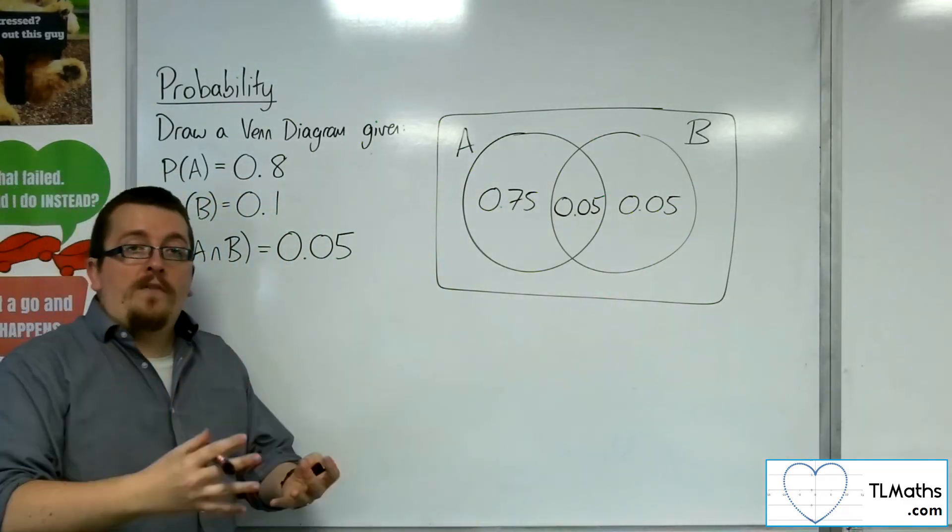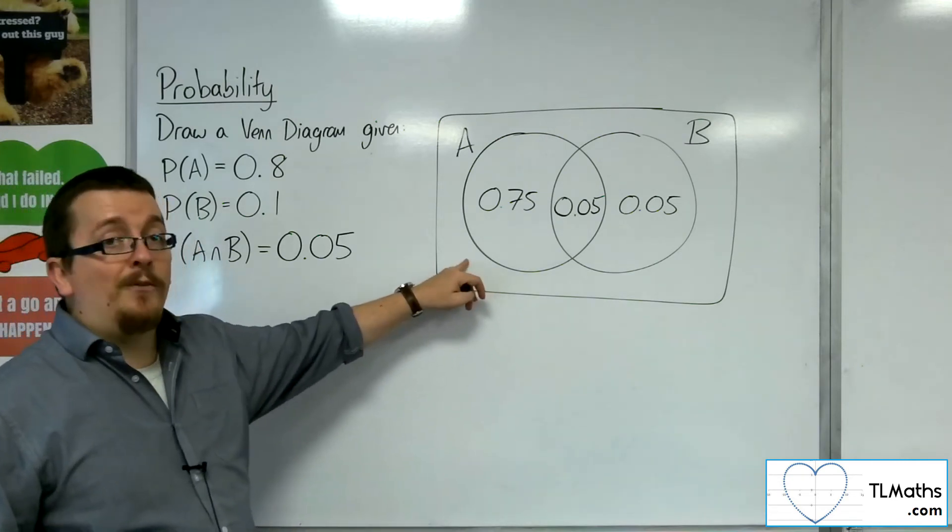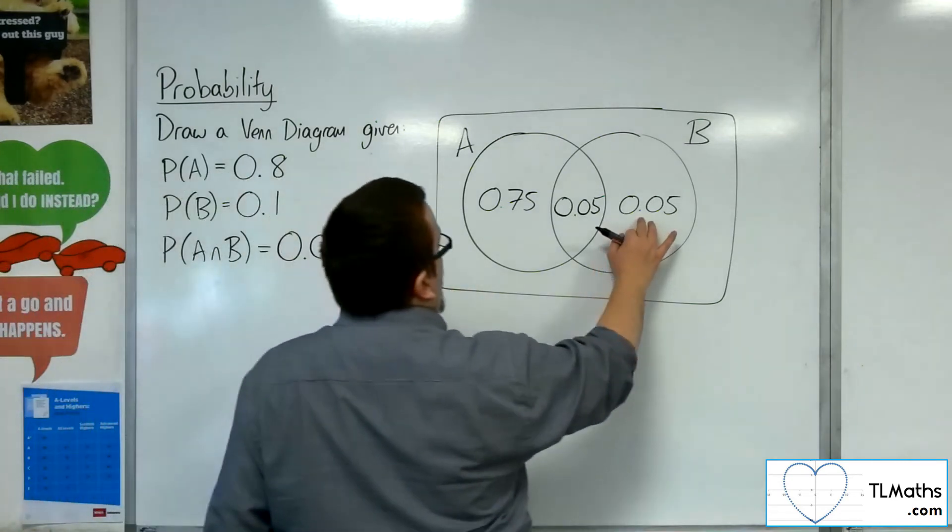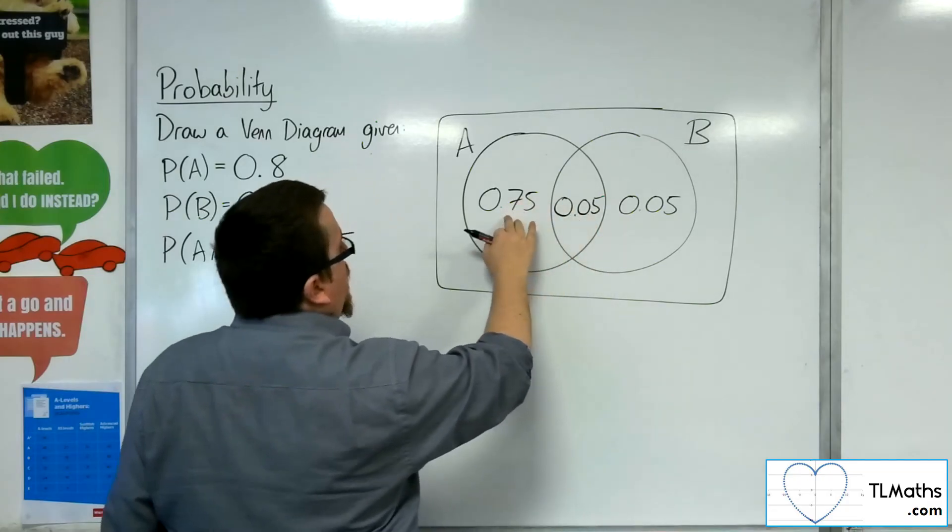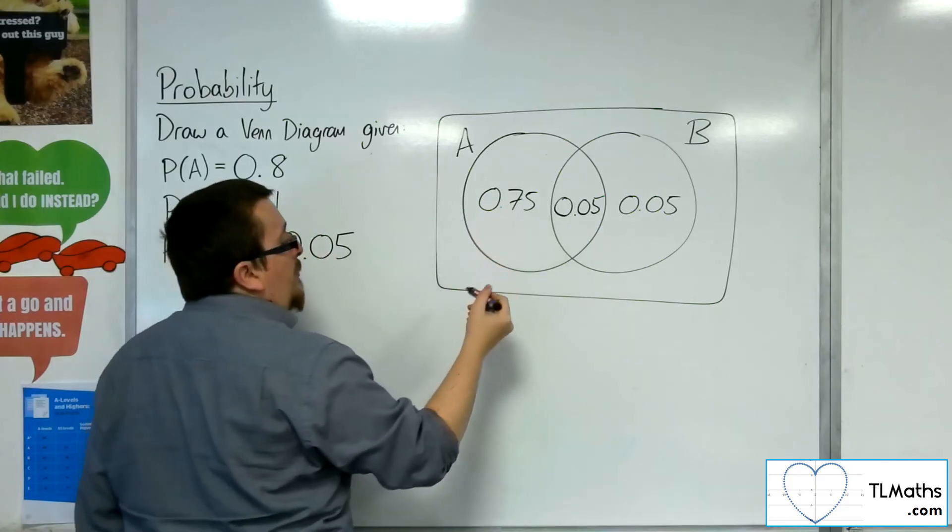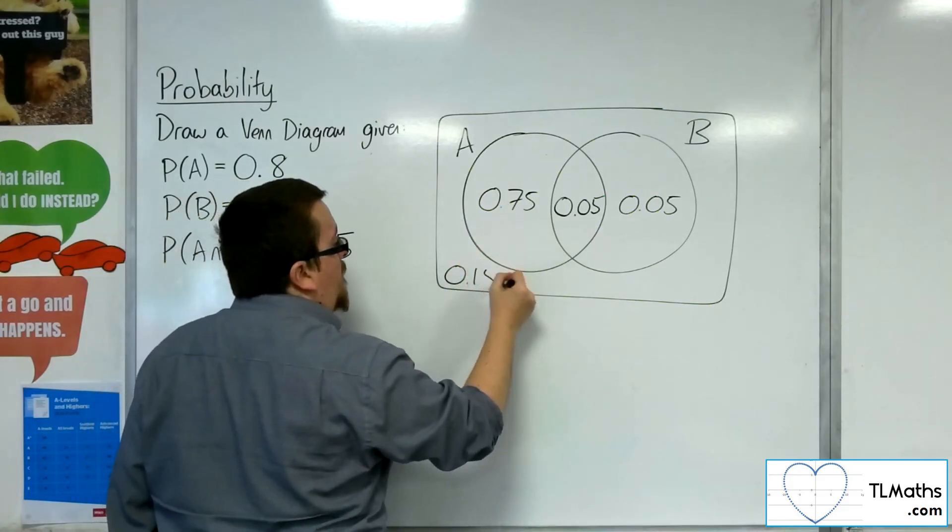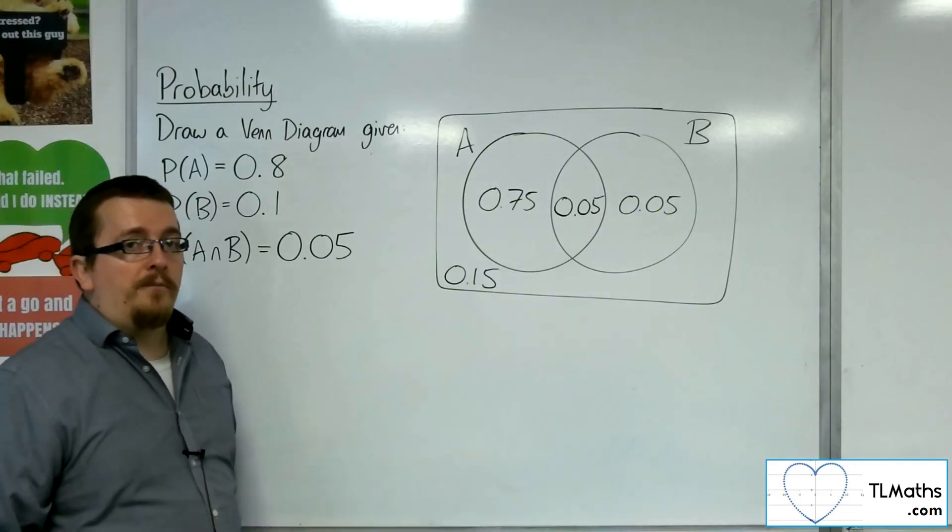So then, once you've got that, we're not quite done, because we need to check if there's a probability on the outside. The 0.05, 0.05 add up to 0.1. Adding up the 0.75 gets me to 0.85, so that must mean that there's 0.15 outside the circles, because all those probabilities have got to add up to 1.